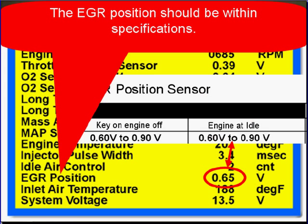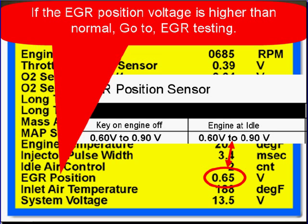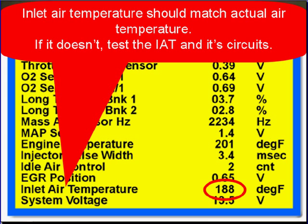The EGR position should be within specifications. If the EGR position voltage is higher than normal, go to EGR testing. Air inlet temperature should match the actual air inlet temperature. If it doesn't, test the IAT and its circuits.